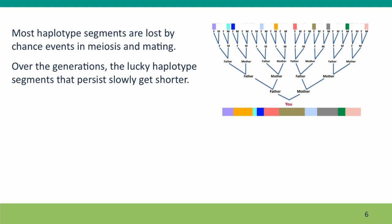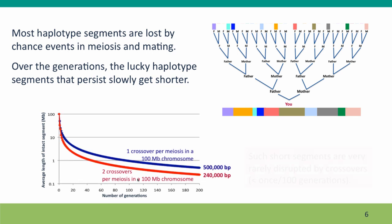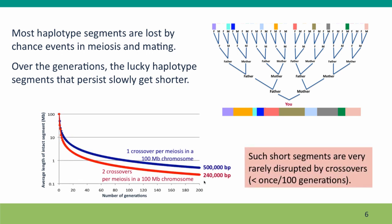Most haplotype segments get lost because of chance events in meiosis and mating. When we looked at comparisons between the grandchild and the grandparent, we could easily find examples where whole chromosomes had not been passed on. Over more generations, more and more chromosomes would just by chance not be included in the gamete that became the next generation. The segments that do get passed on will gradually get shorter as other segments are lost, but they are replaced by new segments from other relatives. This graph analyzes how quickly the segments are predicted to get shorter.